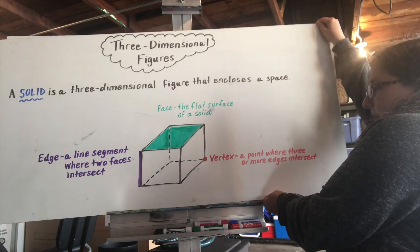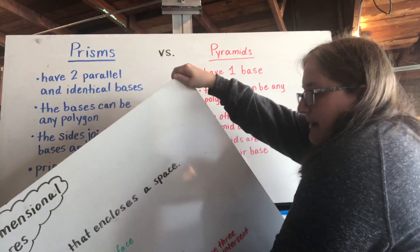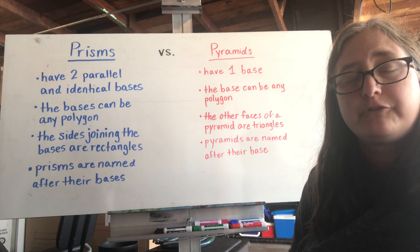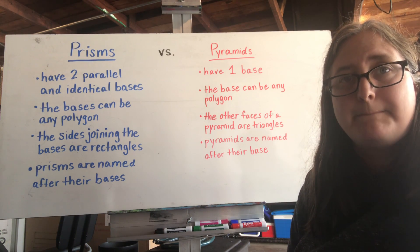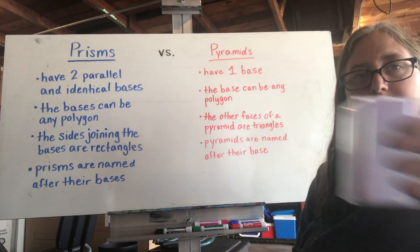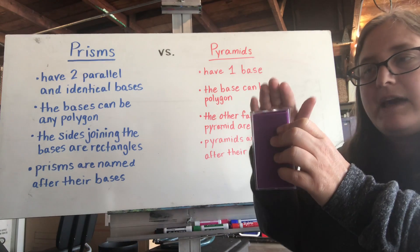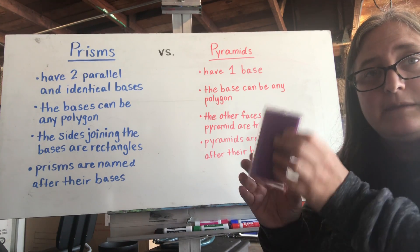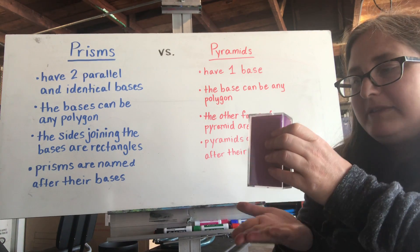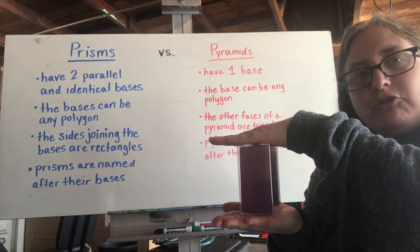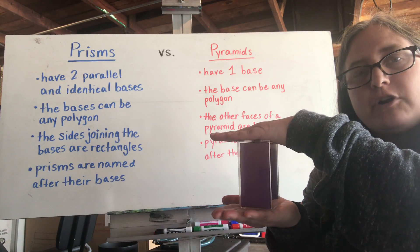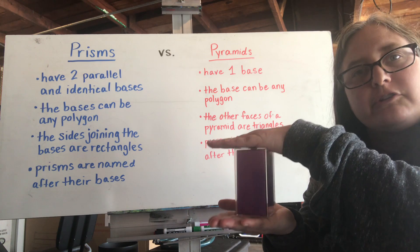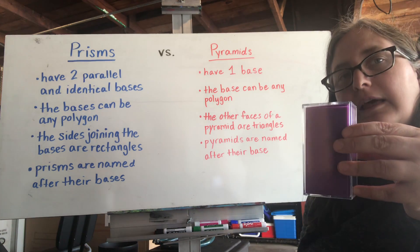Now we want to talk about the difference between two very common solids: prisms and pyramids. Prisms always have two parallel and identical bases. This figure here is a prism because it's got a top and a bottom — these are considered the bases — that are identical, meaning exactly the same shape and size. They're also parallel, which means they never touch. If I put my hand along the bottom and the top, I see that these two bases are never going to intersect. They're connected by all those sides in the middle, but they themselves will never touch. So, prisms have two parallel and identical bases.